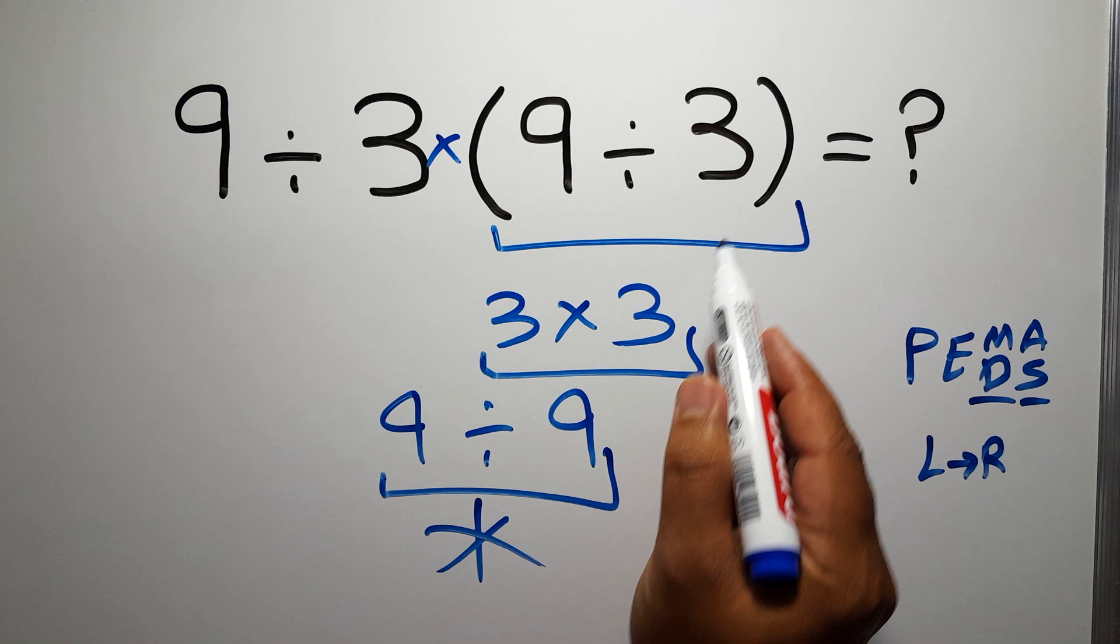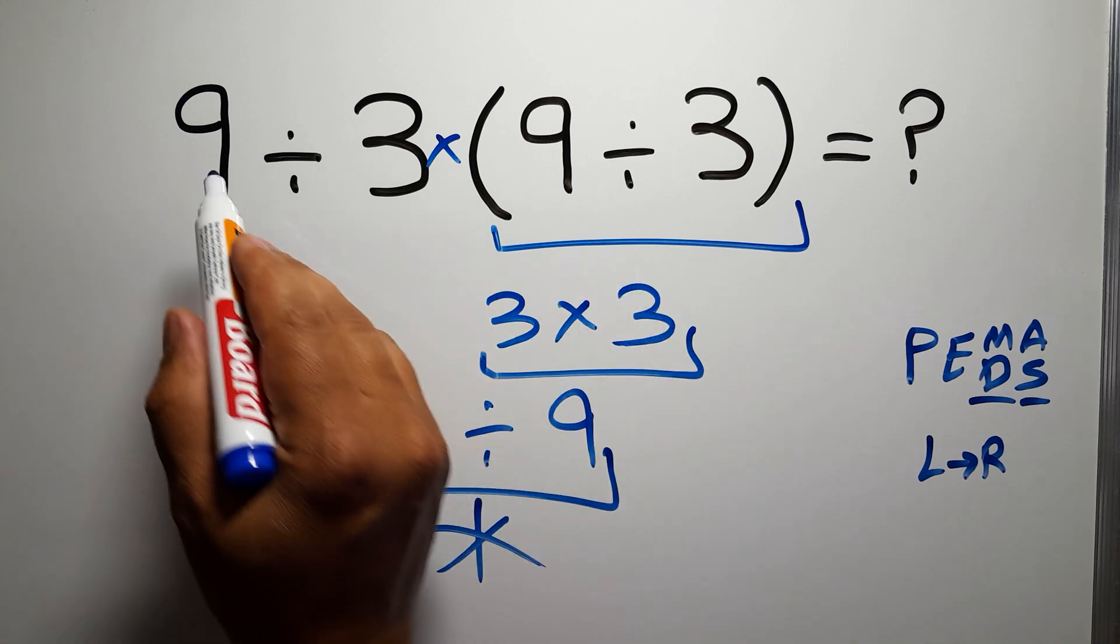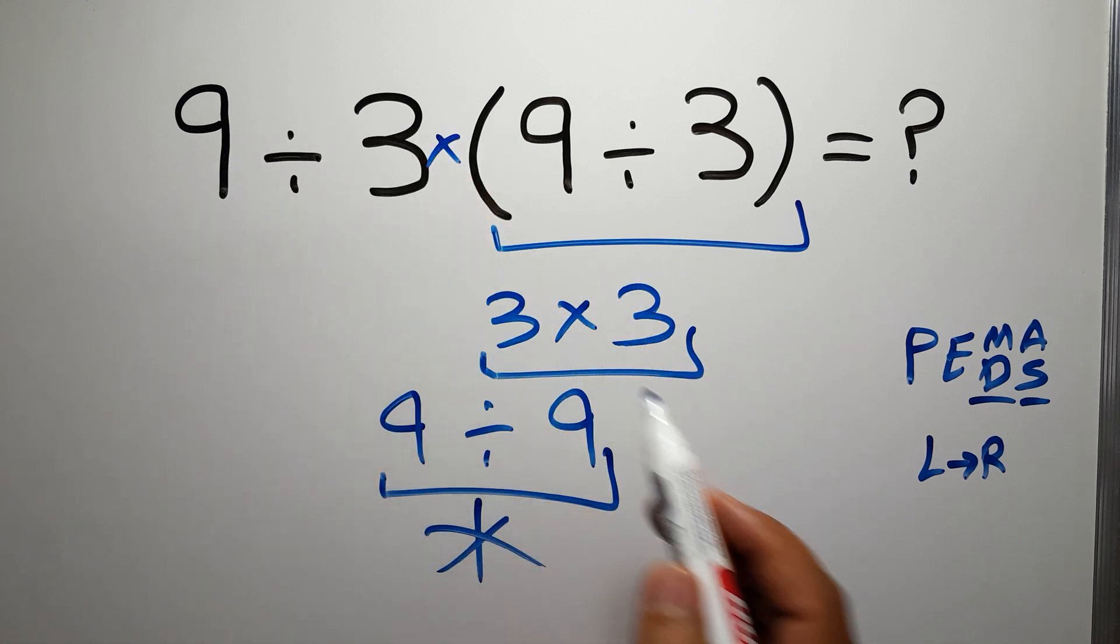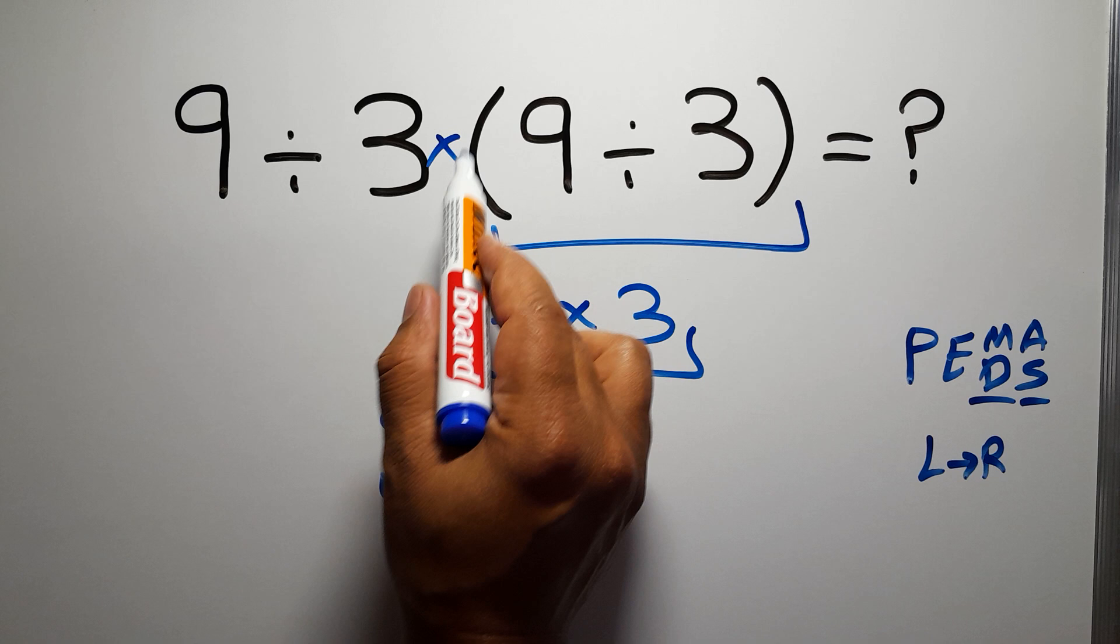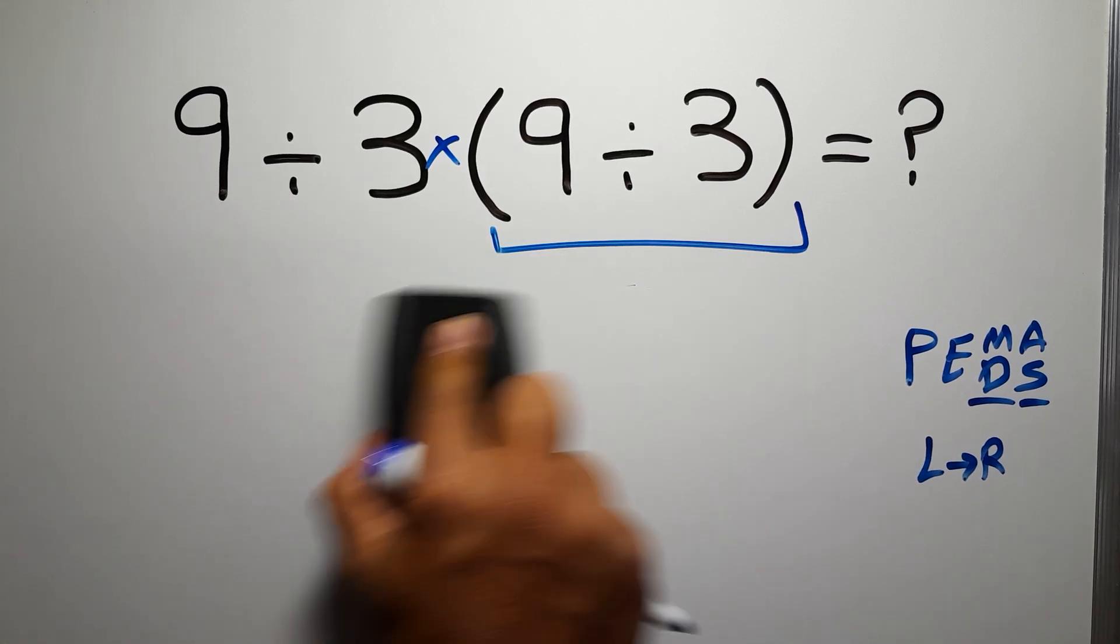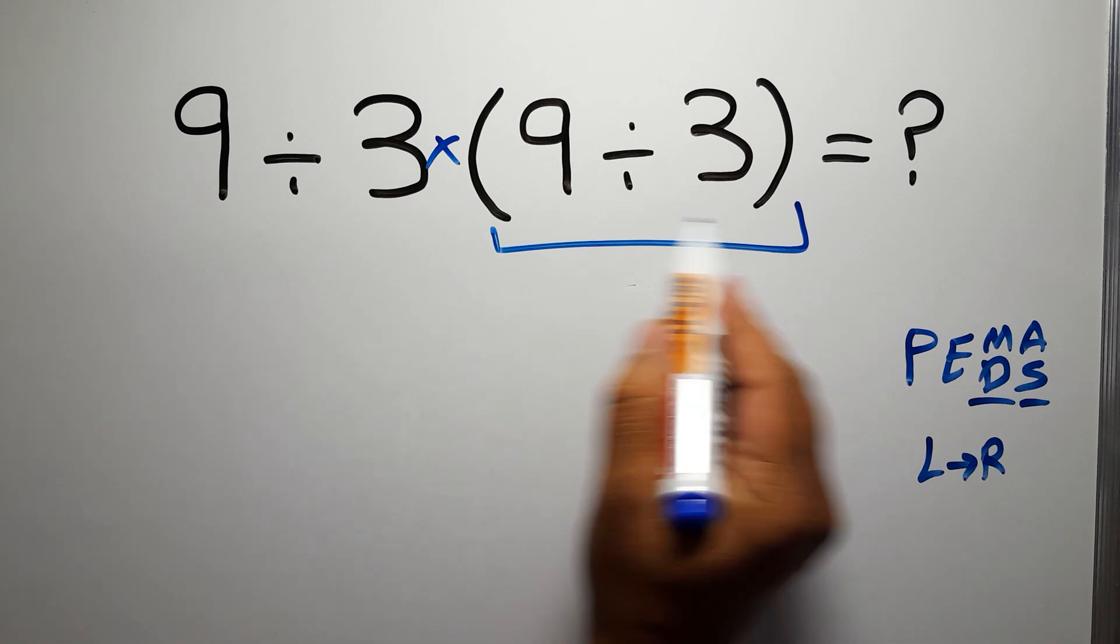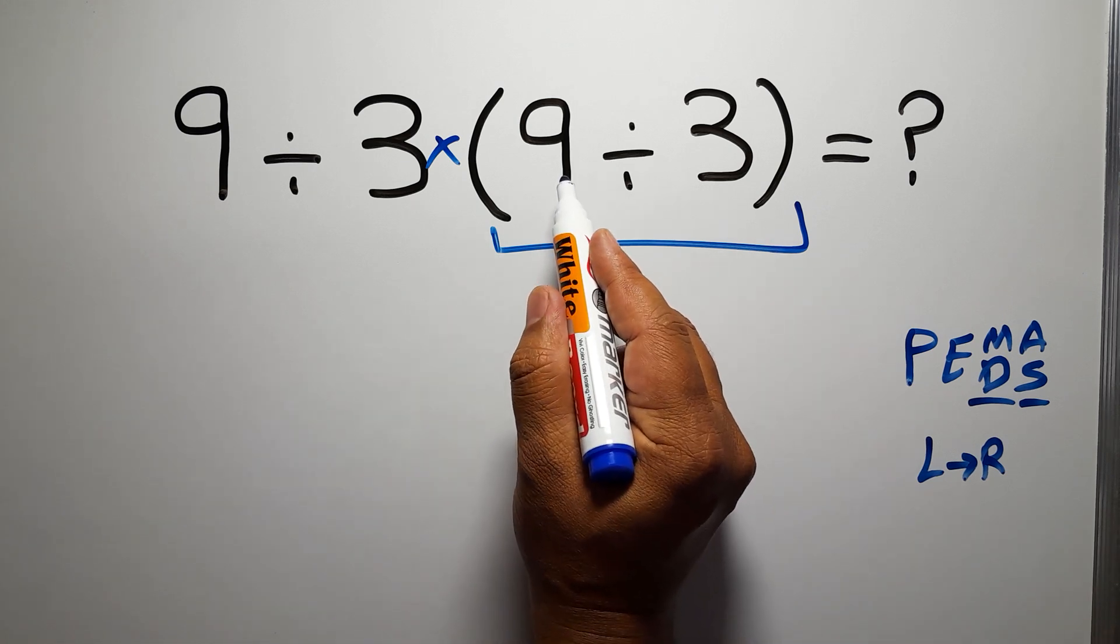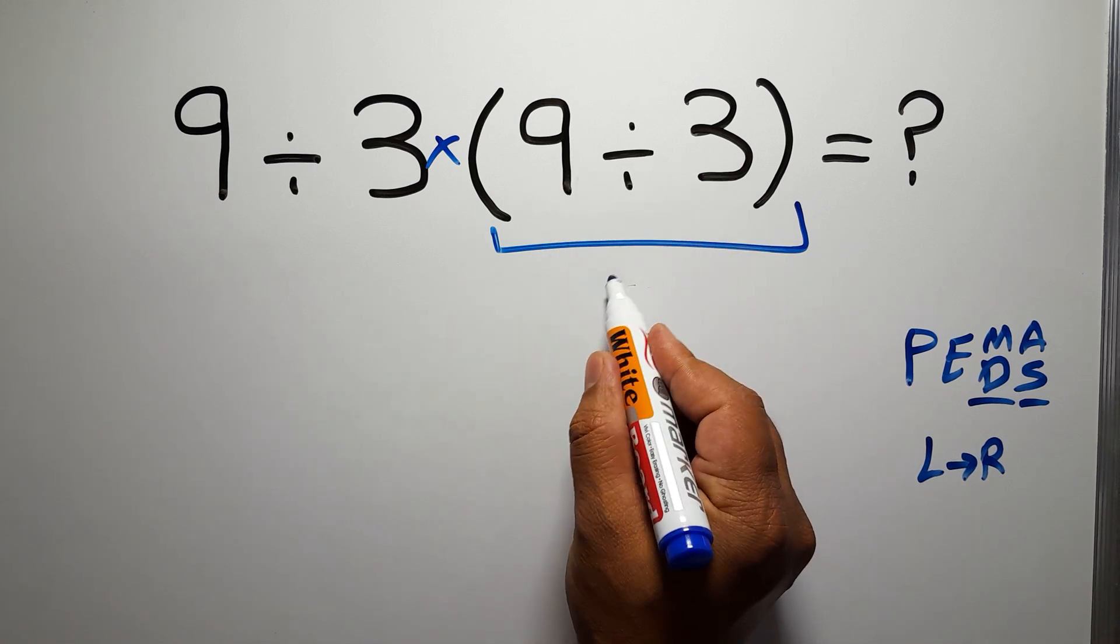According to PEMDAS, first we have to do this parentheses, then this division, and finally this multiplication. If you do this multiplication before this division, it is wrong. So first, this parentheses.